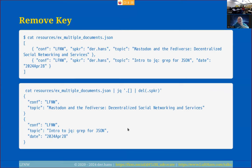We can remove a key using the 'del' function — 'del(.speaker)' — which passes through everything else and removes the speaker field. This is like a 'grep -v' kind of thing. We end up with two documents just like the input, but with the speaker name missing from both.